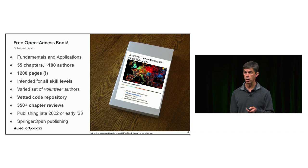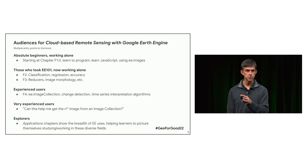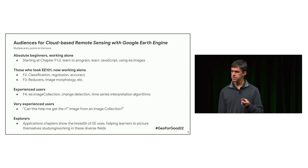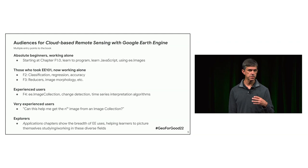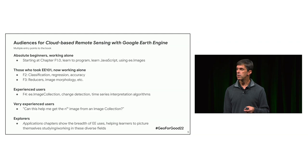We envision about five audiences for this book. For an absolute beginner working alone — someone who's never written a program — they can start at section F1. For someone who's taken a class like Earth Engine 101, section F2 continues that learning, covering classification, regression, model accuracy, and reducers. For experienced users, we cover things like change detection and time series algorithms in F3 and beyond.